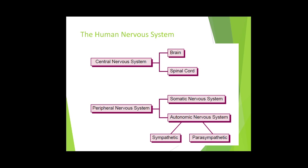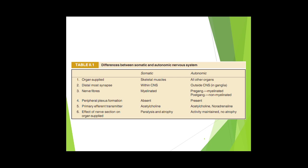The human nervous system can be largely divided into the central nervous system and peripheral nervous system. The central nervous system has two parts: nerves arising from the brain and the spinal cord. The peripheral nervous system is divided into somatic nervous system and autonomic nervous system, which is further subdivided into sympathetic and parasympathetic nervous system.